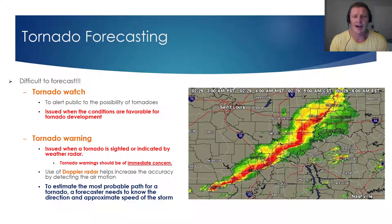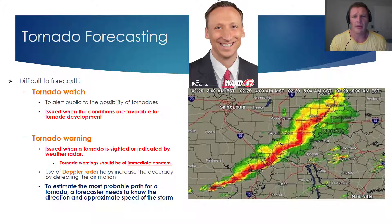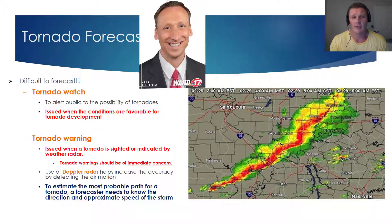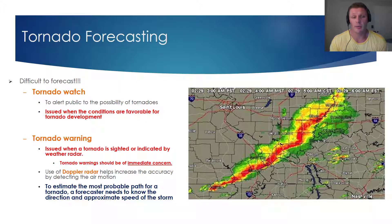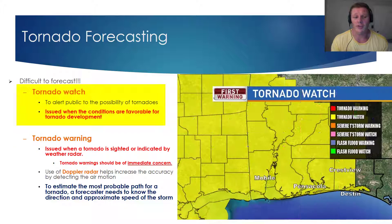The final consideration in this vodcast is tornado forecasting. Hats off to our hard-working meteorologists around the country, because tornadoes are difficult to forecast. It's very important that you know the difference between tornado watches and tornado warnings — not just for this class, but for your own safety and well-being. A tornado watch is issued when the conditions are favorable for tornado development, and tornado watches will typically cover a very large area of land to alert the public that there is a possibility for tornadoes.